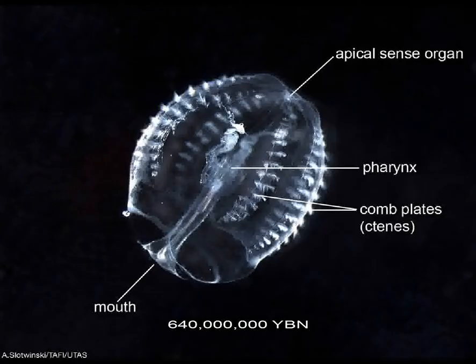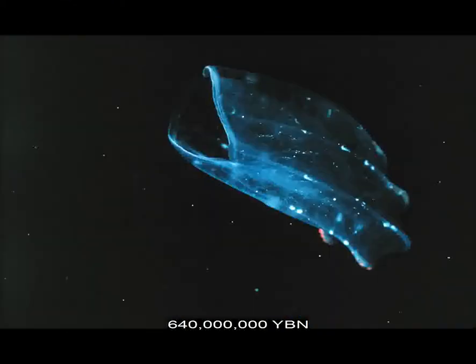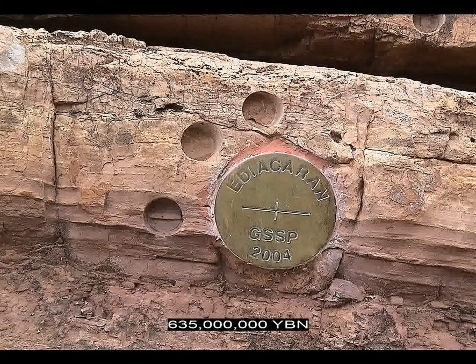Like the cnidarians, the ctenophores are diploblastic—they have two embryonic germ layers, the ectoderm and the endoderm, which become the adult epidermis and gastrodermis, respectively. The middle mesenchyme, a watery gelatinous fluid, never produces the complex organs seen in triploblastic metazoa. The main body cavity of the ctenophores is also the digestive chamber, and they have a simple nerve net. Hair-like cilia propel the Ctenophora, instead of the pulsating muscles which propel jellyfish. The start of the Ediacaran period.